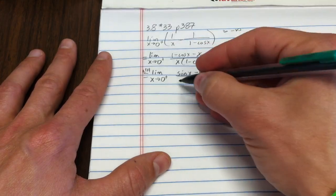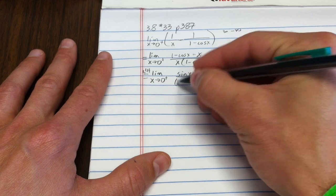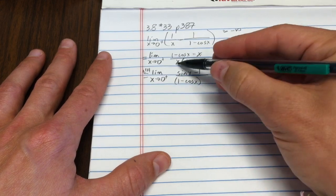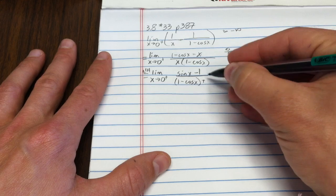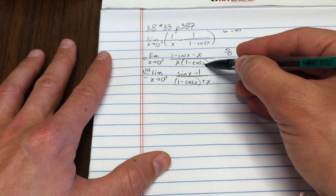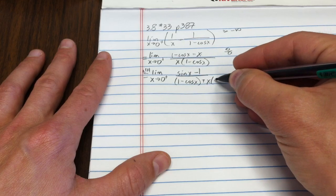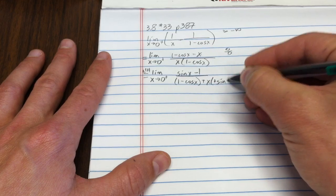Here I'll use a little product rule. So that's 1 times 1 minus cosine x. Then the second piece is x times the derivative of this piece here, which is positive sine x.